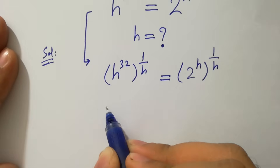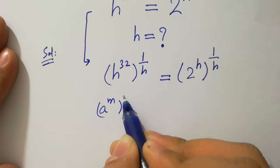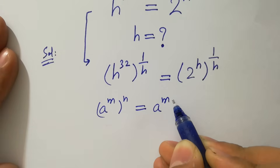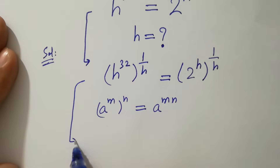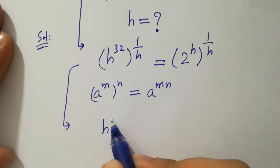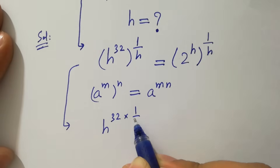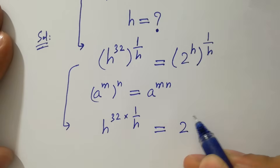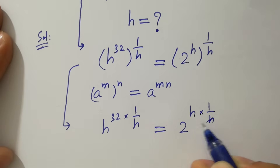Since a to the power m, to the whole power n, equals a to the power m times n, it will be h to the power 32 times 1 over h, equal to 2 to the power h times 1 over h. The h cancels.